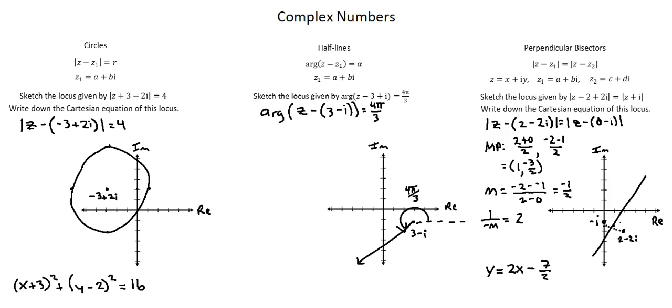One final concept for this lesson is to understand how to work with the circles example in the case of an inequality. Let's consider that our inequality is the modulus of z minus quantity negative 3 plus 2i modulus sign is less than 4. In this case, rather than a solid line on the circle, we would want a dotted line on the circle.